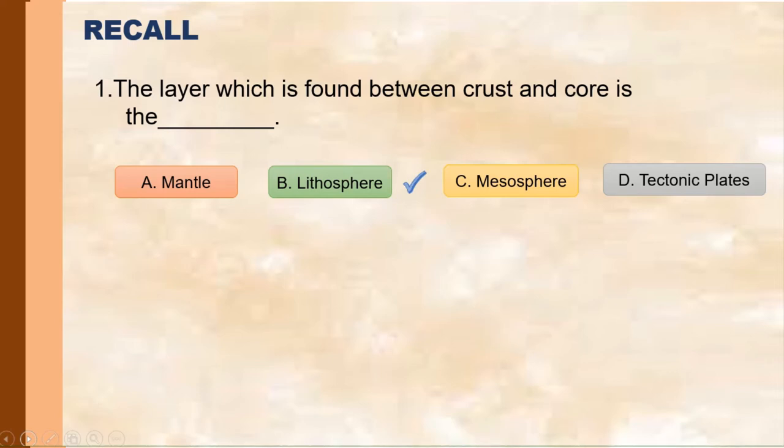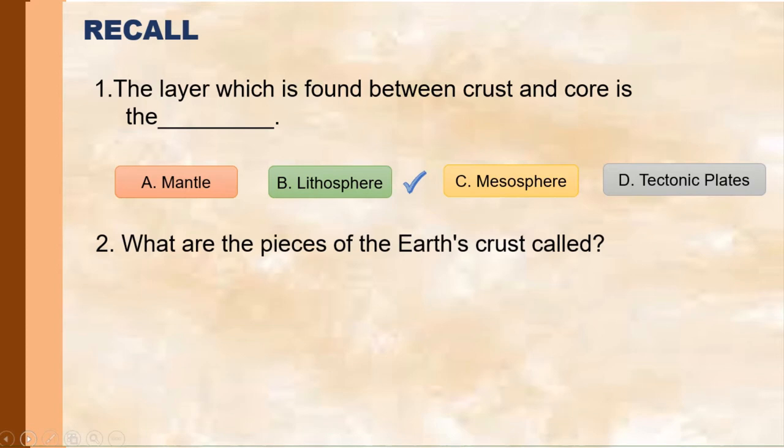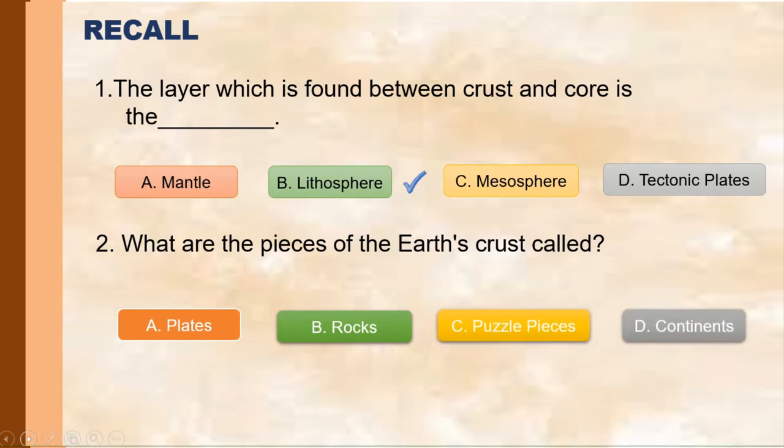Let's have number two. The question is, what are the pieces of the Earth's crust called? Letter A, plates, B rocks, C pastel pieces, D continents. And the answer is letter A.